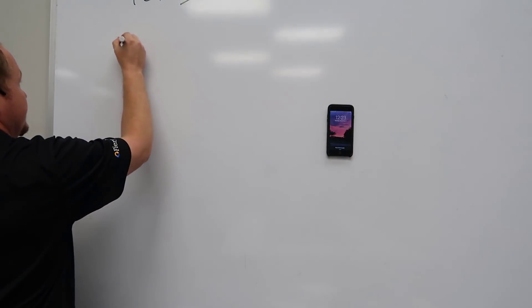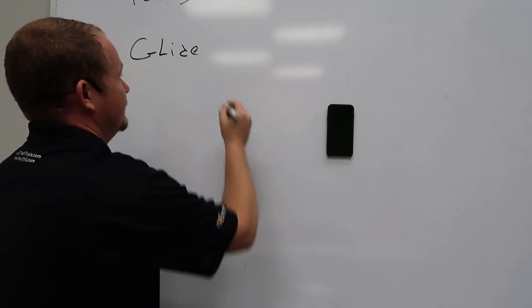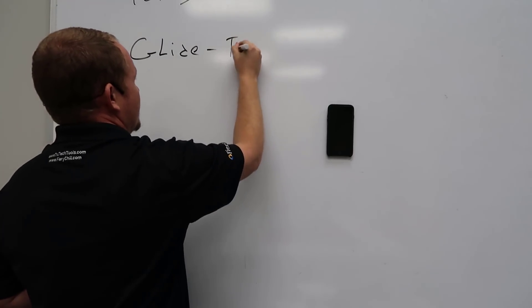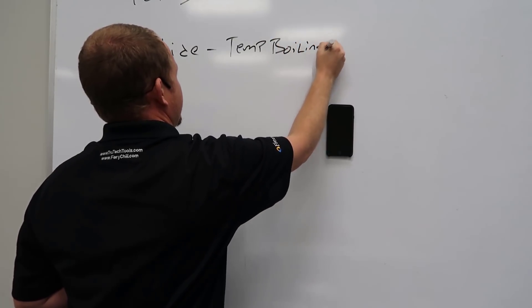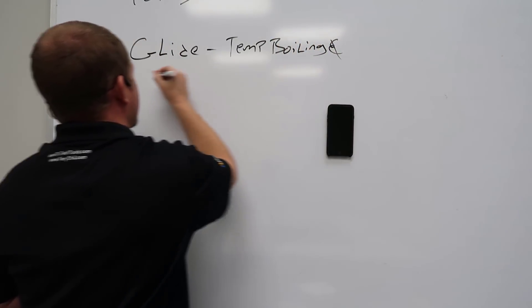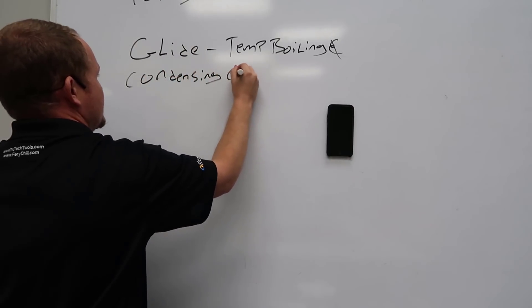We're going to be talking about refrigerant glide. We're just going to write glide here, and glide means that the temperature of boiling and condensing changes.